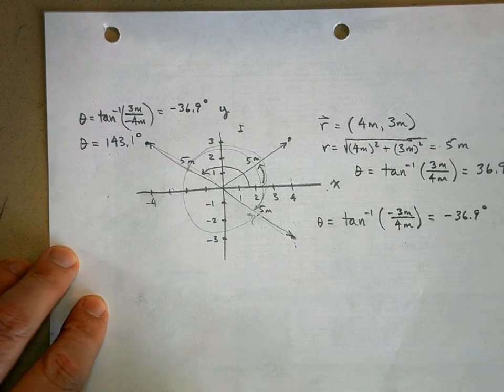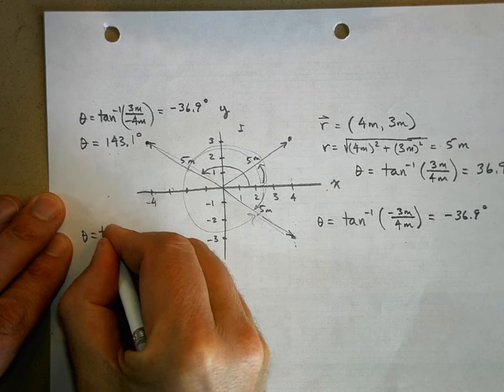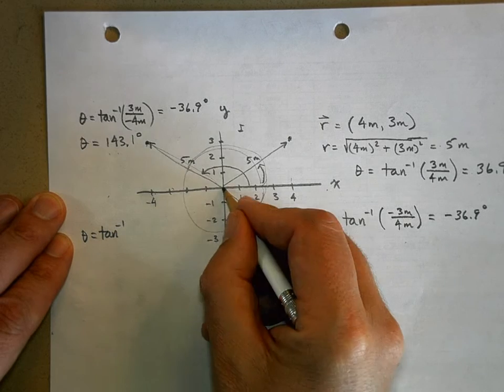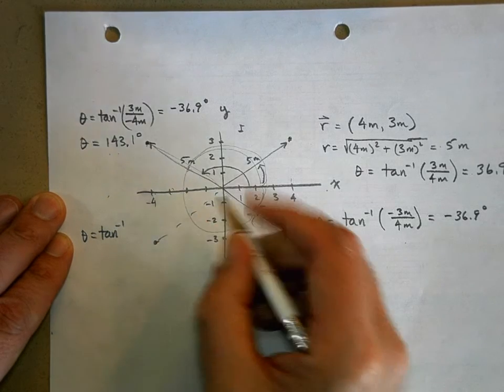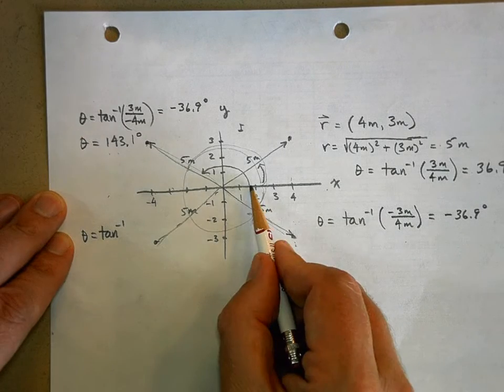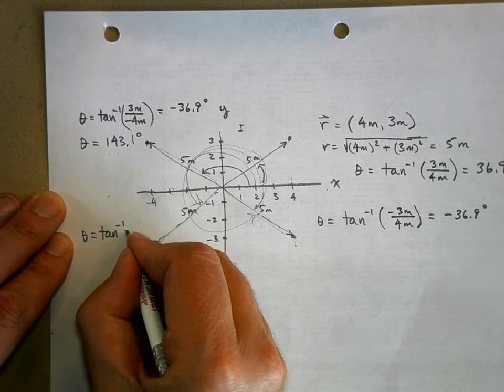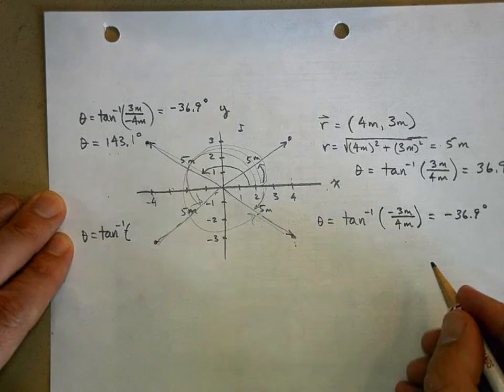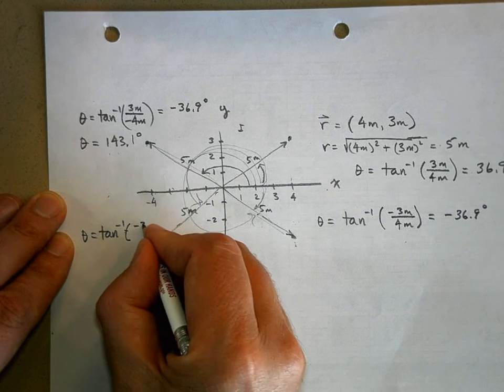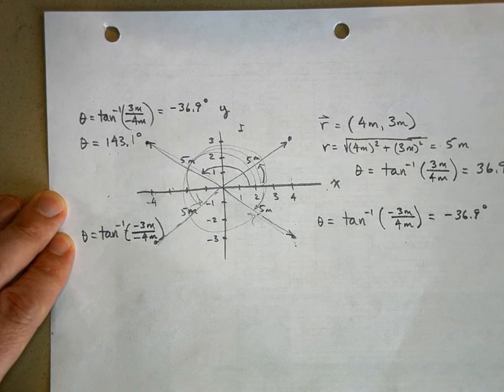Let's take a look at the fourth quadrant. Well, if you're down here, you're still 5 meters away from the origin. But what angle? What angle is this? Well, you're going to have the inverse tangent of negative 3 meters over negative 4 meters. Well, what's negative 3 divided by negative 4?